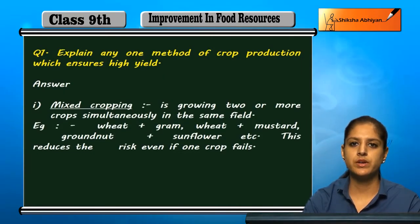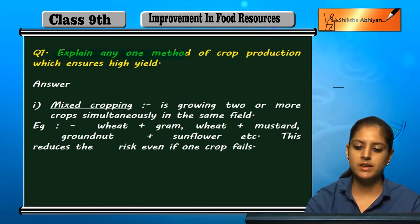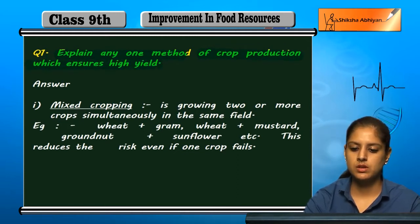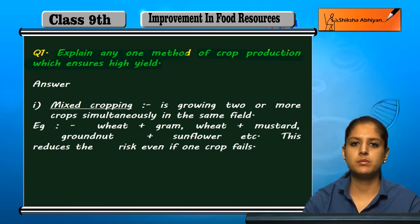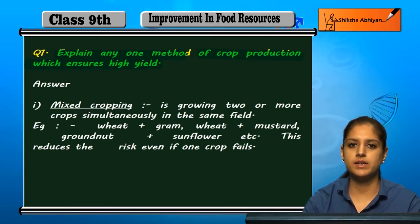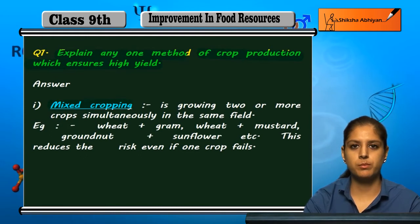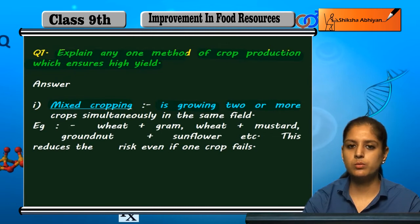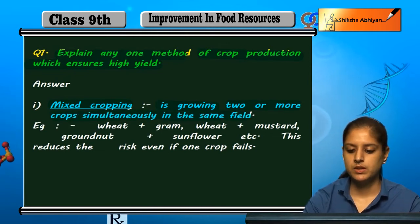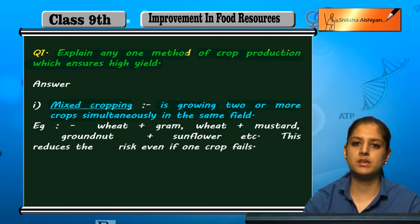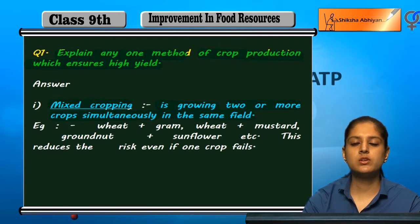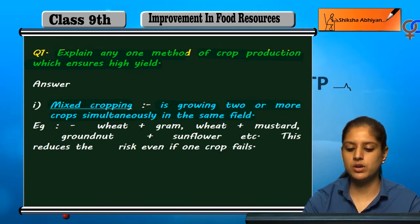Let us discuss questions on this chapter. The first question is: explain any one method of crop production which ensures high yield. We have chosen mixed cropping. Mixed cropping means growing two or more crops simultaneously in the same field. As the name suggests, crops are mixed and grown together at the same place.